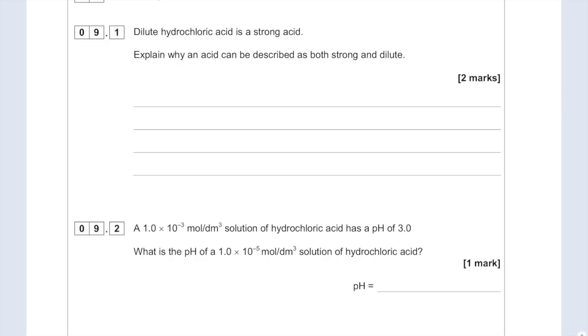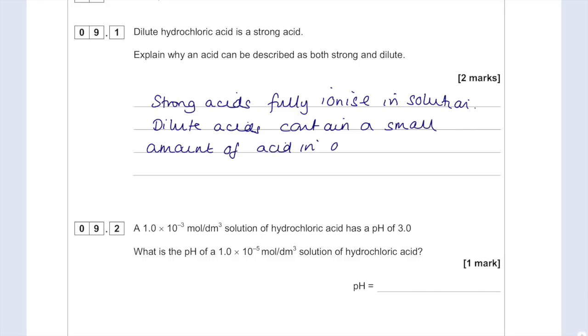This question is about acids and alkalis. Dilute hydrochloric acid is a strong acid. Explain why an acid can be described as both strong and dilute. Two marks, so two separate points. Strong acids fully ionize or dissociate in solution. Dilute acids contain a small amount of acid in a particular volume.